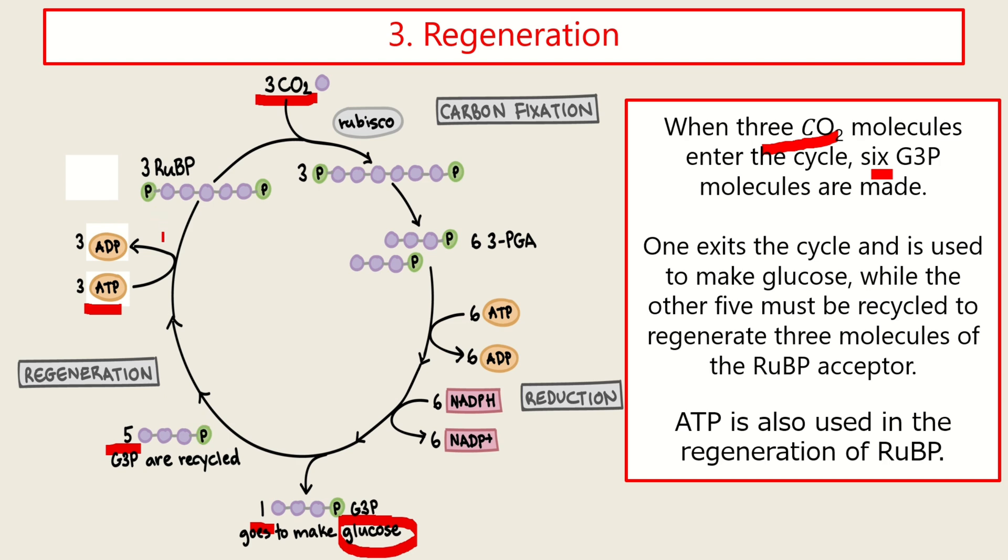In order to create one molecule of glucose, we need six turns of the Calvin cycle. So six turns of Calvin cycle is equal to one molecule of glucose.